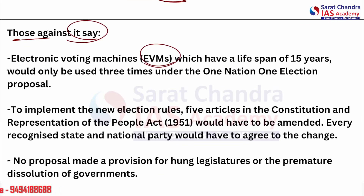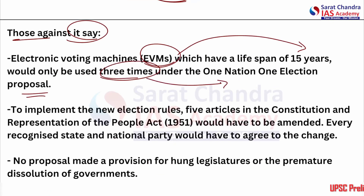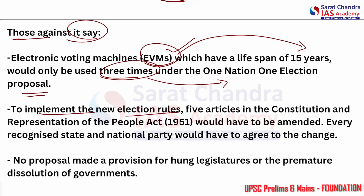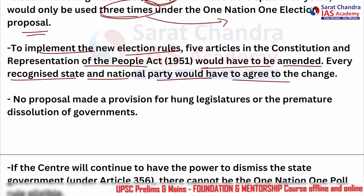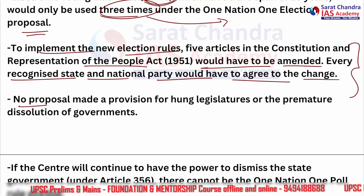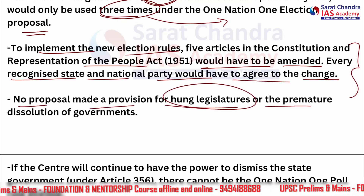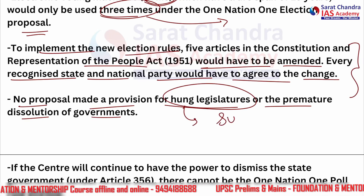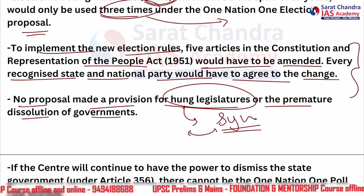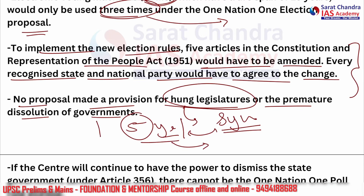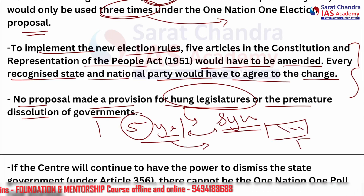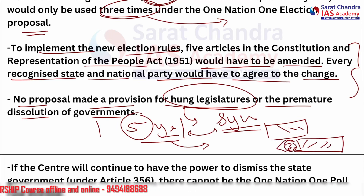Those against it say: EVMs have a lifespan of 15 years and would only be used three times under the one nation, one election proposal. To implement the new election rules, five articles in the constitution and the Representation of People Act would have to be amended, and every recognized state and national party would have to agree. Third, no proposal has been made for a provision for hung legislatures or premature dissolution of government — this is a key concern.